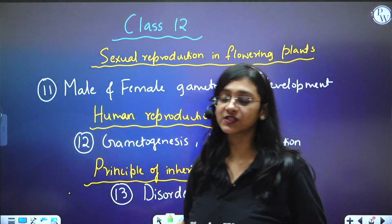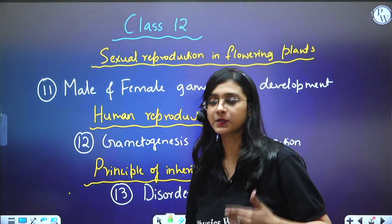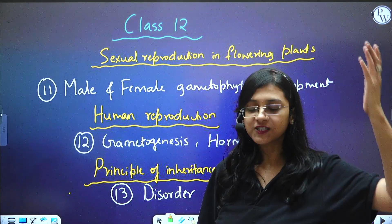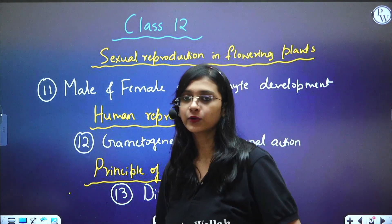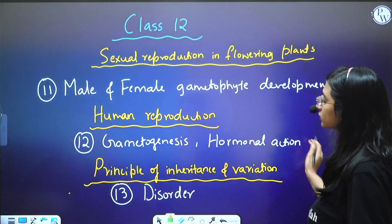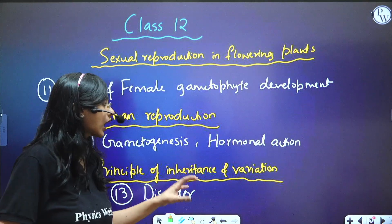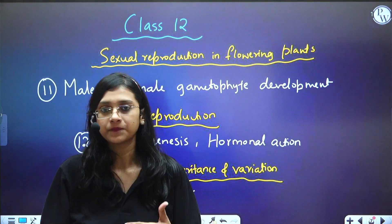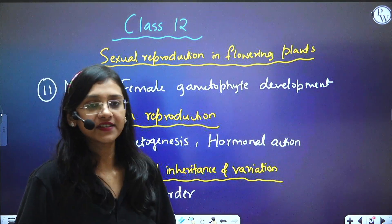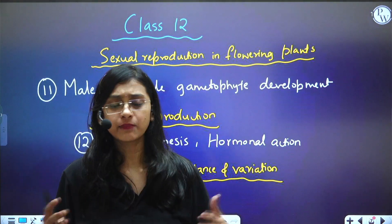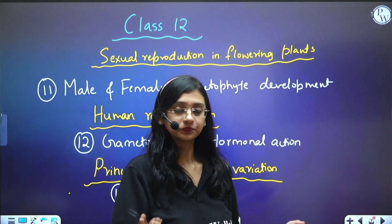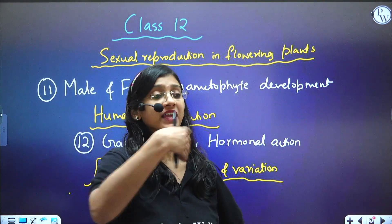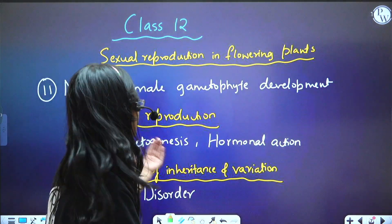From Human Reproduction, gametogenesis — both male and female — is important. This covers oogenesis and spermatogenesis from the beginning (oogonia, spermatogonia) all the way to ovum and spermatozoa. You also need to know hormonal action — how hormones like FSH and LH act in both male and female, and how progesterone, estrogen, and testosterone affect the reproductive system and their functions.